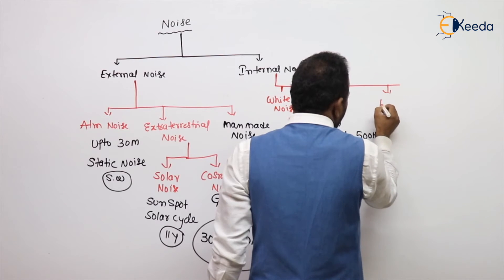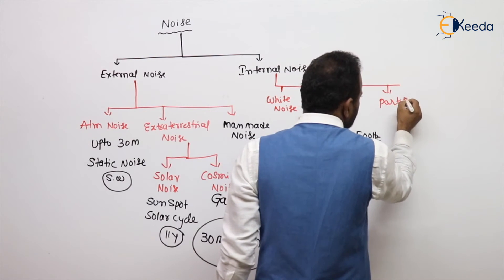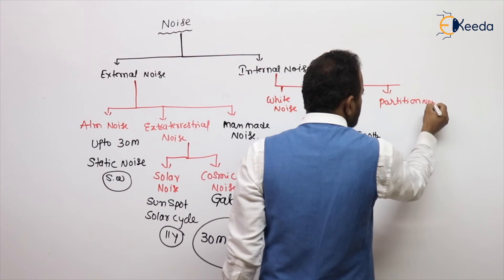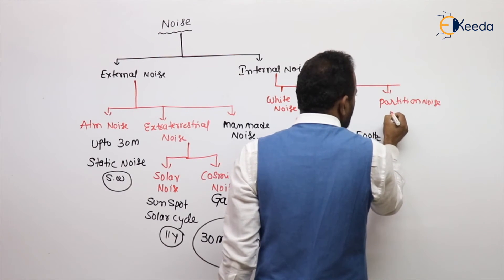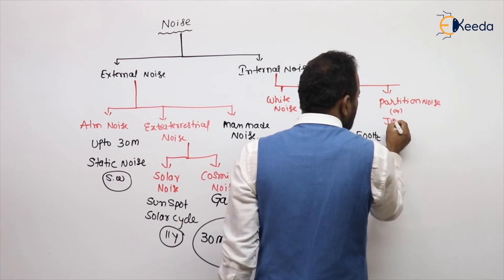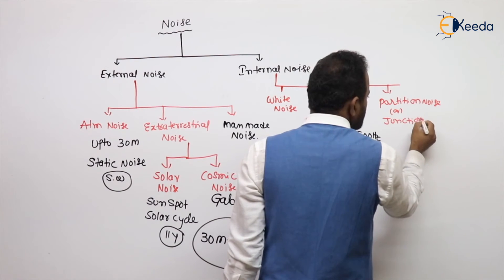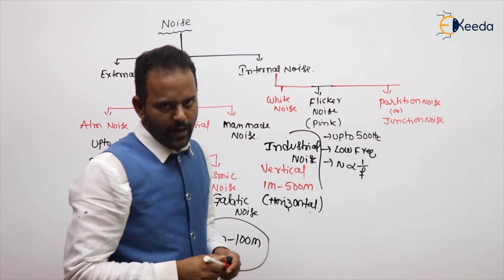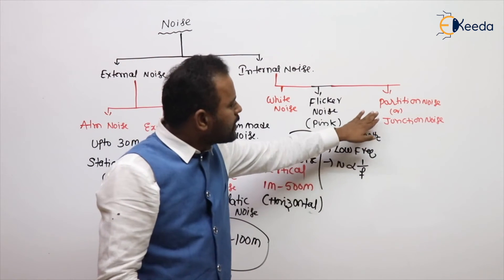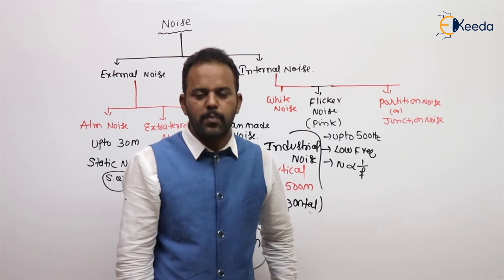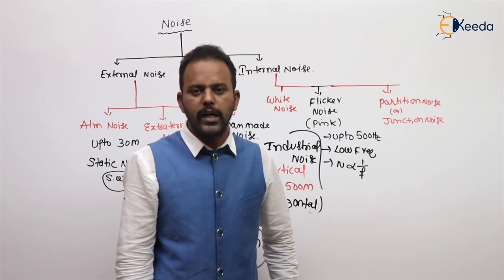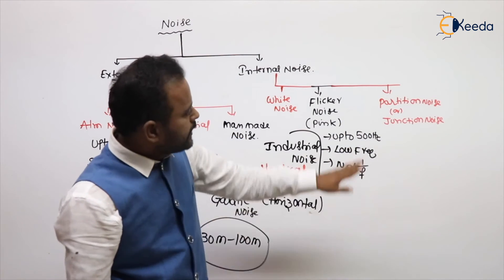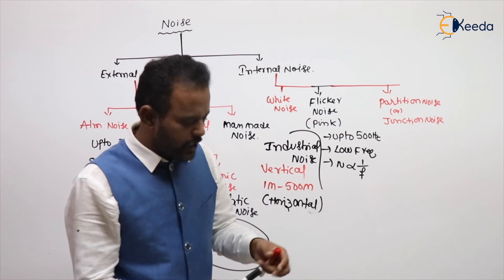Next we have partition noise, also called junction noise. It occurs because of partitions in vacuum tubes and junctions in semiconductor devices. Due to these junctions or partitions, the movement of electrons is disturbed, and the resulting noise is called partition noise.